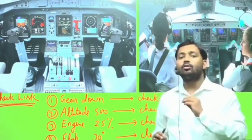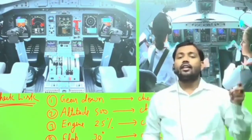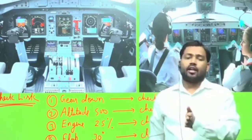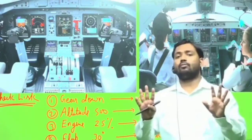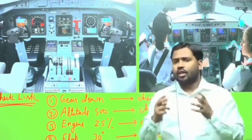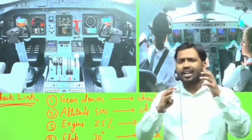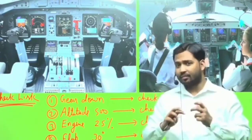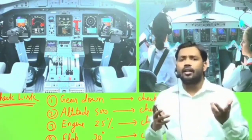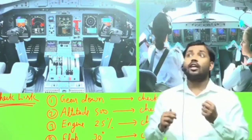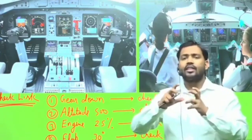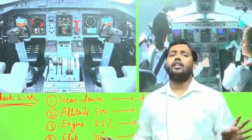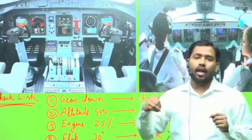Whenever any task is completed, the pilot says 'check.' When communicating with ATC — the air traffic controller — the pilot does not say 'yes.' Instead, they say 'roger' or 'copy,' meaning the message was received and understood. 'Negative' means no. This is because radio frequencies can overlap, so specific code words are used to avoid confusion with air traffic control. 'Roger' means okay, 'copy' means okay, 'negative' means no, and 'check' means the task you called out has been done.